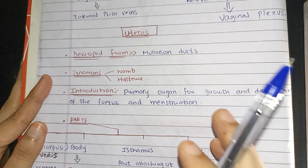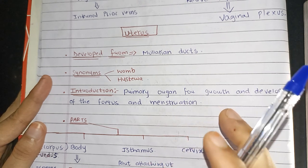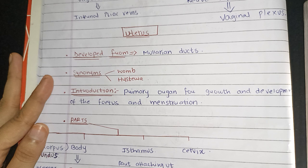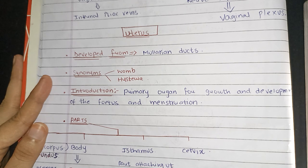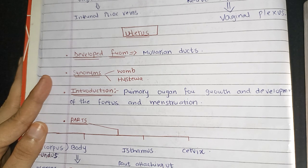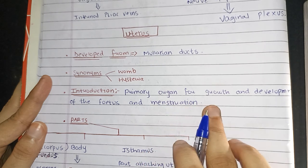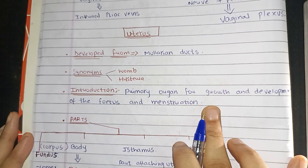Uterus is the only organ in which implantation occurs, in which the fetus grows, and delivery of the baby takes place. Menstruation also occurs here.